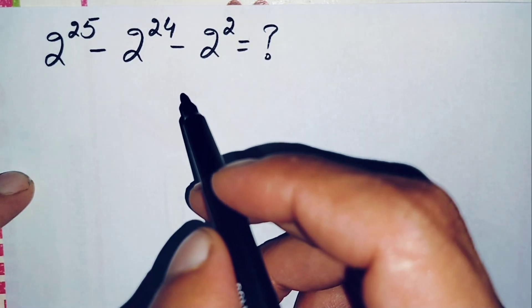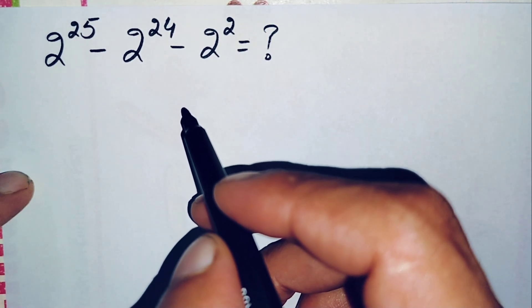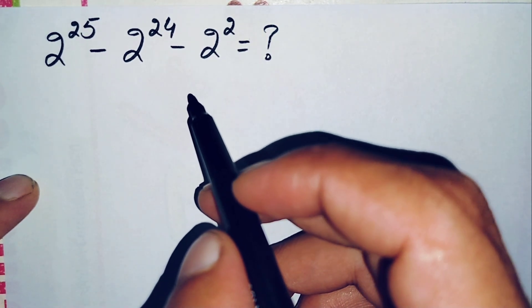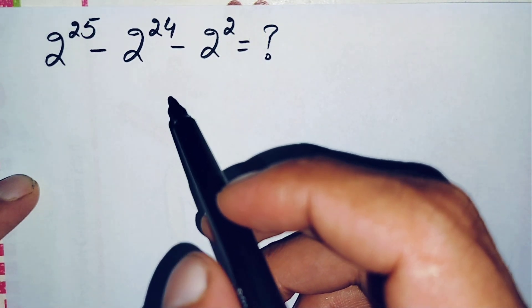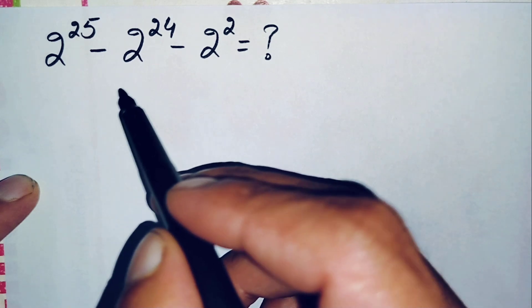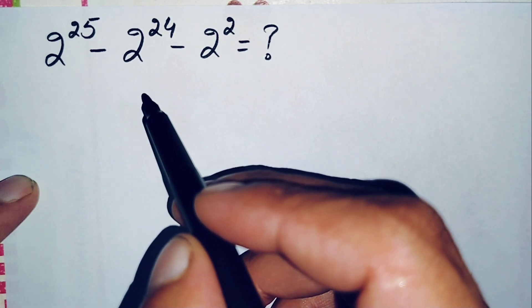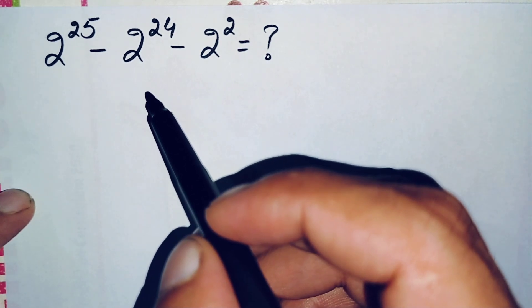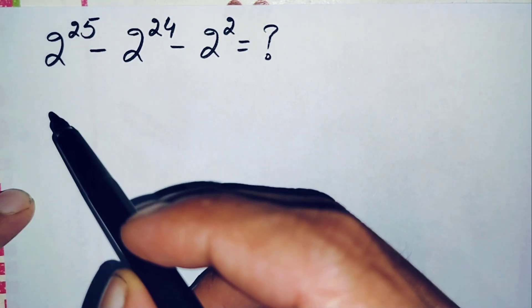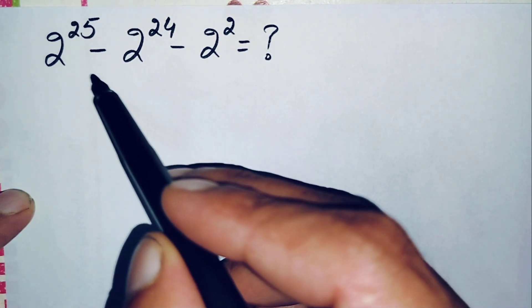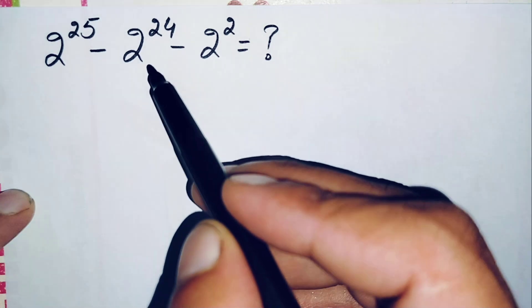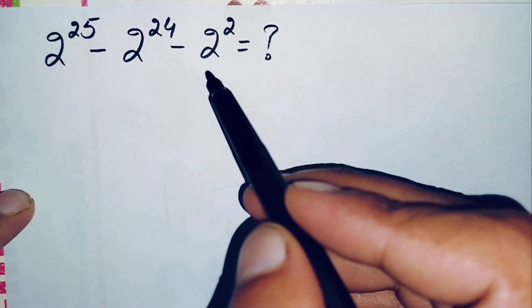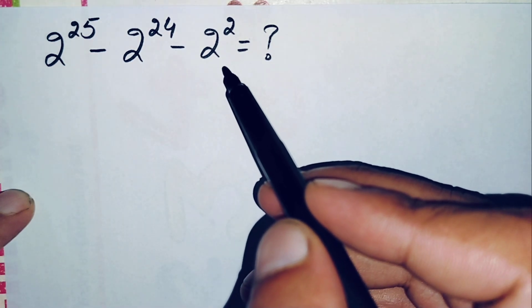Hello everyone, welcome back to Math Explorer. In this video I'm going to solve and find the value of this nice simplification math problem, which is 2 raised to power 25 minus 2 raised to power 24 minus 2 raised to power 2.